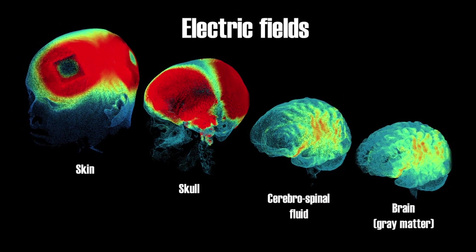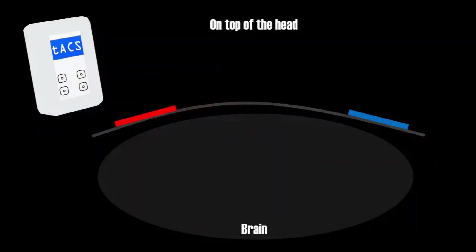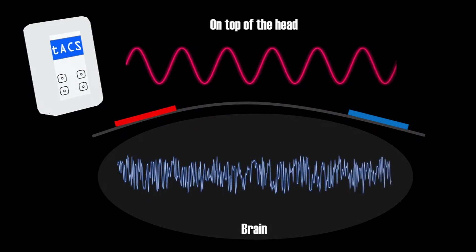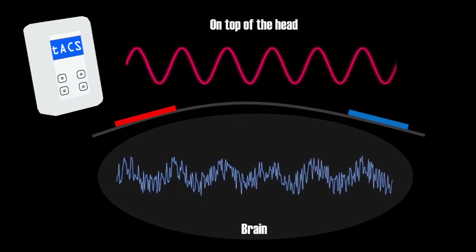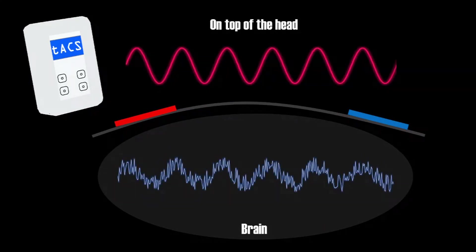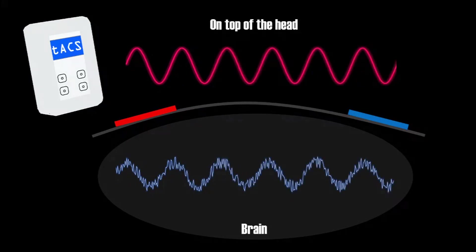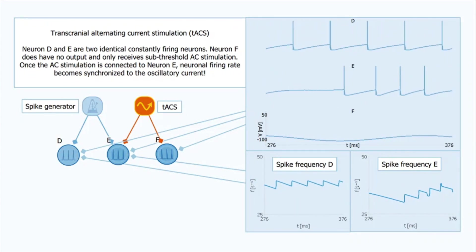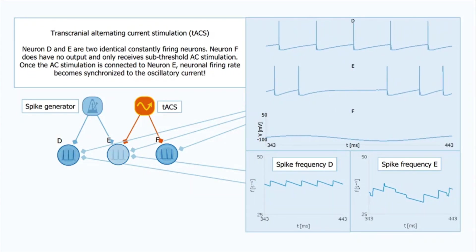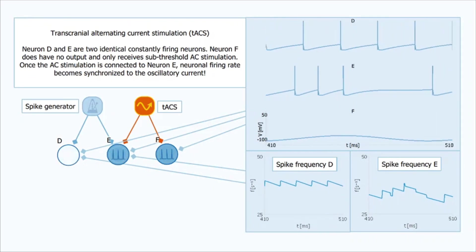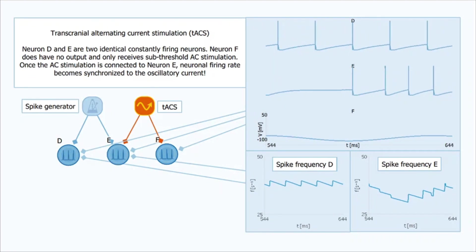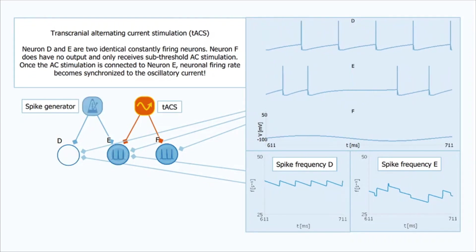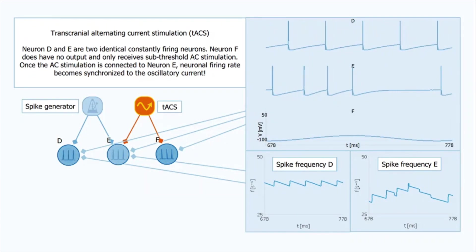So what is this entrainment exactly? The idea is that by applying a sinusoidal alternating current to the head, neurons within the brain will adapt to that frequency. For example, when applying a TACS wave at 10 Hz — meaning that there are 10 waves per second — it is hypothesized that neurons in the brain also start firing at this 10 Hz rhythm. In the very simplified example on screen, neuron D does not receive TACS and has a certain firing pattern. However, neuron E is identical to neuron D but does receive TACS, and we can observe that the pattern of neuronal spikes is quite different and that it follows the rhythm of the TACS, which is seen in section F.